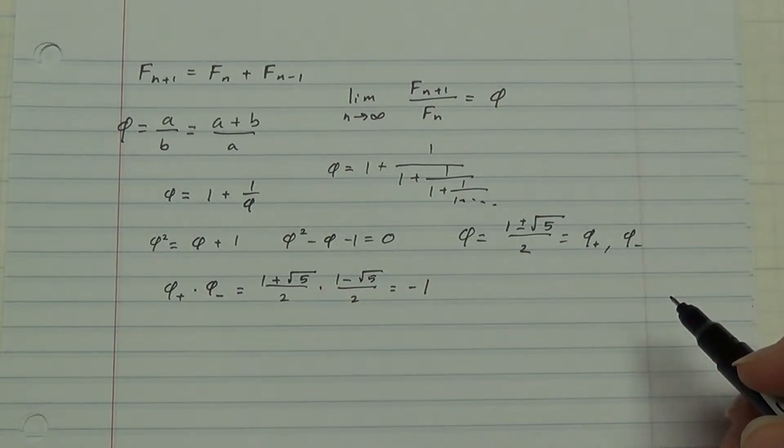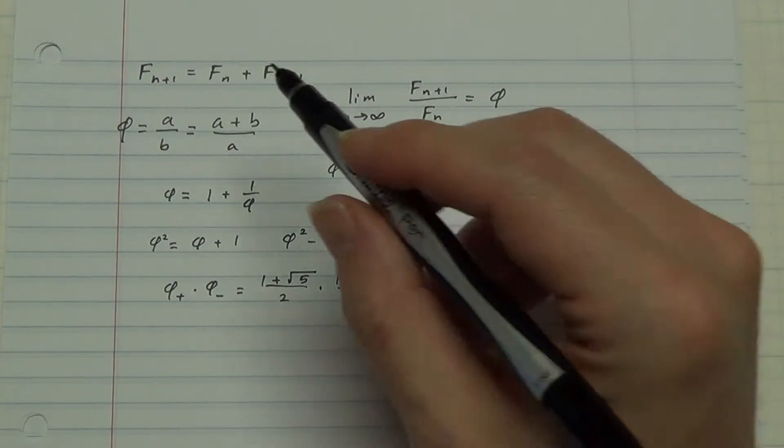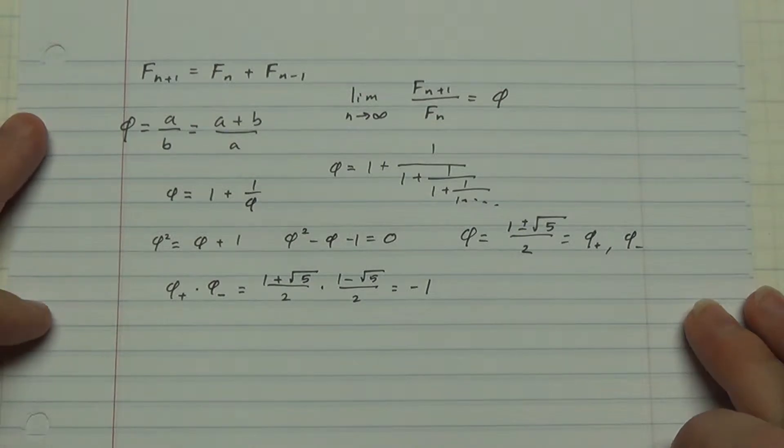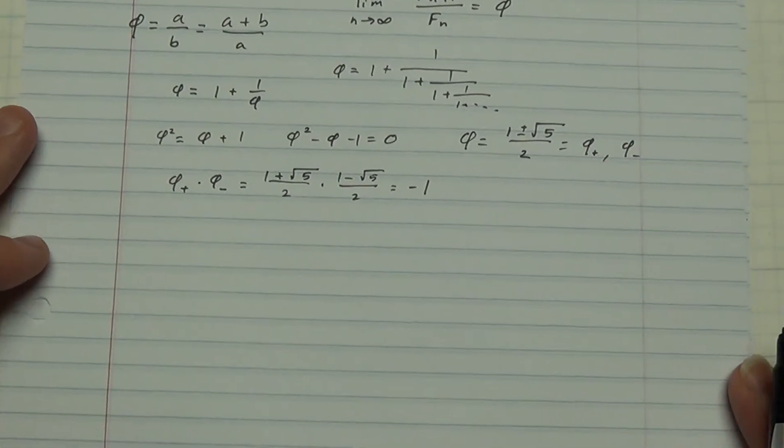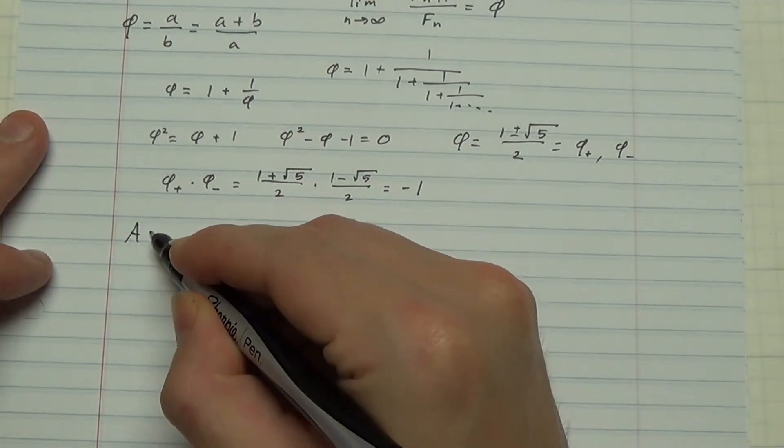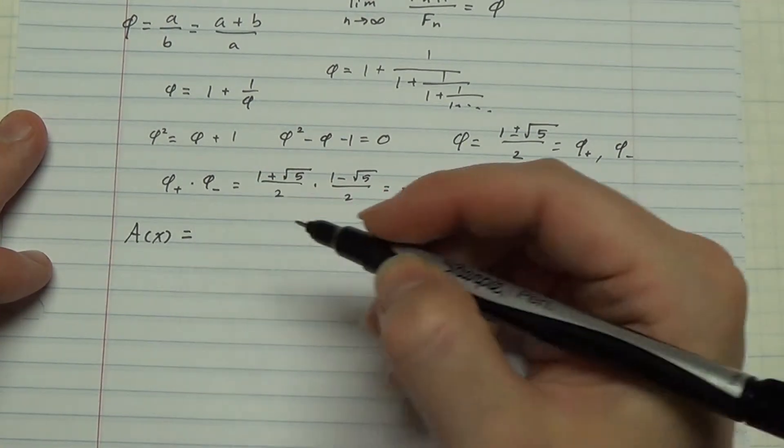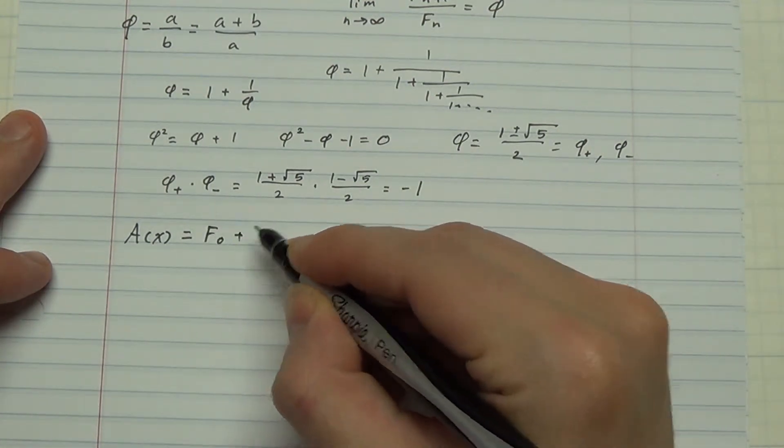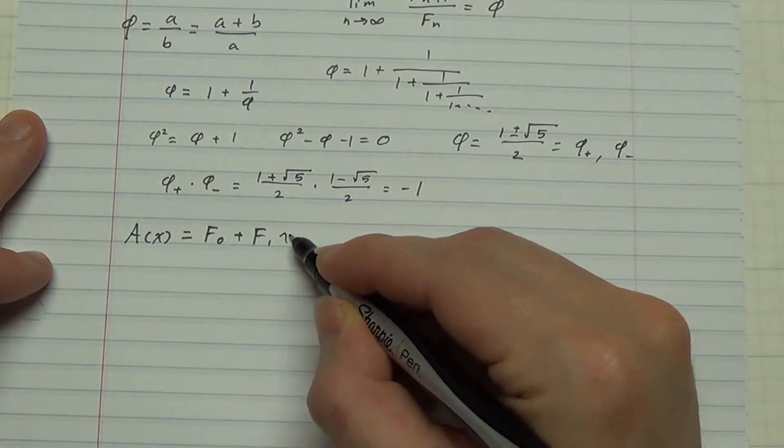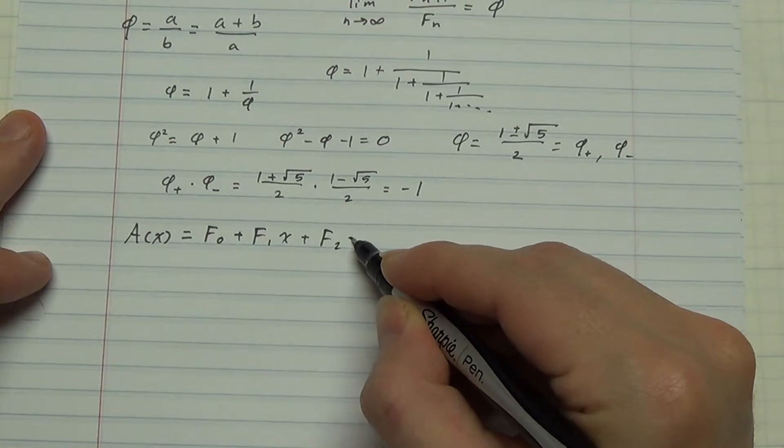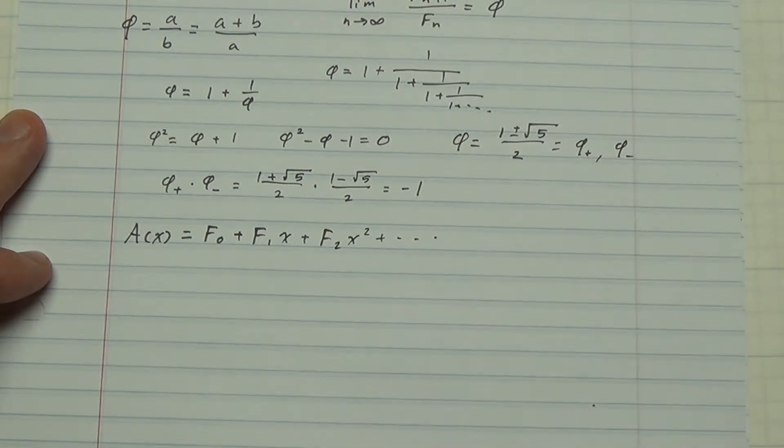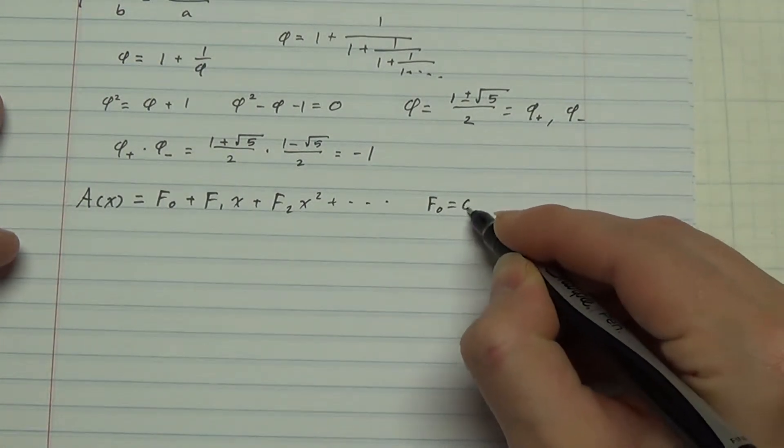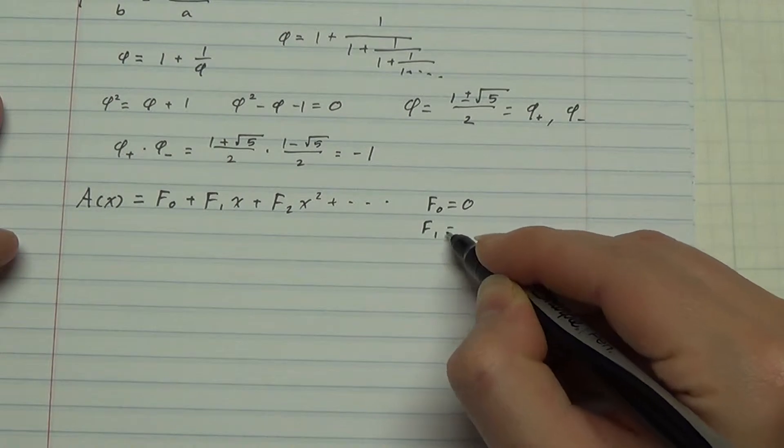Okay, so we've talked a little bit about the golden ratio. Let's go back to the Fibonacci sequence and start this method of generating functions. Well, what is a generating function? A generating function is an infinite polynomial where the coefficients are the terms of the sequence. And let me write down the base terms, F0 is 0, F1 is 1.